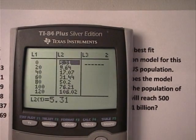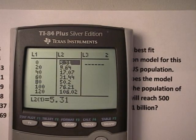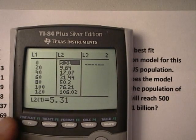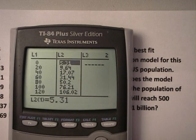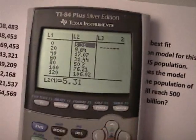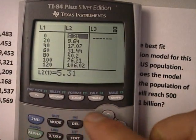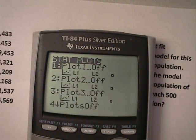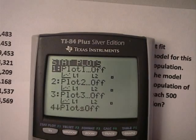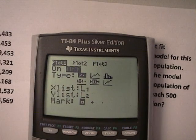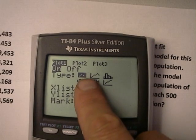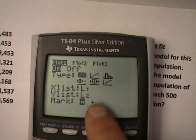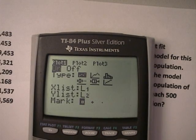The first thing we've got to do is actually plot the data and see what it looks like in order to determine which regression model we're going to attempt first. We need to first go to the stat plot. We do second, stat plot, and we're going to make sure that the plot one is turned on. Make sure all the rest of them are off. You turn on and off by going back and forth. You want the scatter plot, which is the first one right here. You want to make sure it says L1 and L2. And everything is great.